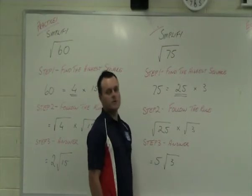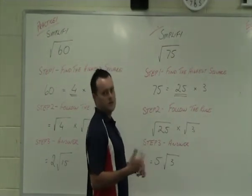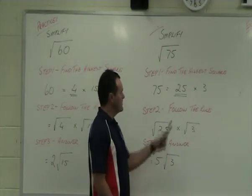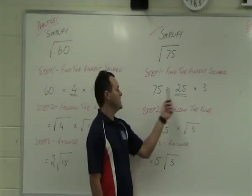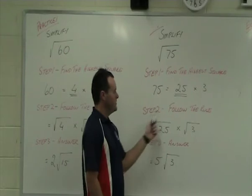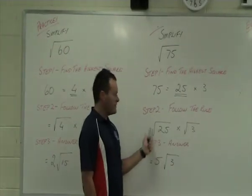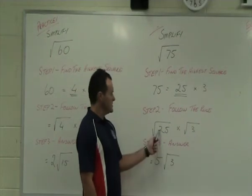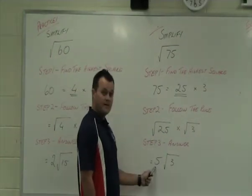Okay, so find the highest square number going through and what goes in and what goes in. You would have found out that 25 was the highest square number. 25 times 3 gives you 75. Follow the rule. 25, so square root 25, square root 3. The square root of 25 then in our answer is 5.